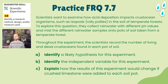For the practice FRQ for topic 7.7, we'll look at an experiment that scientists have set up. After reading the introduction and explanation, you'll identify a likely hypothesis, identify the independent variable, and think about how results would change if crushed limestone were added to each of the soil pots in the experiment.